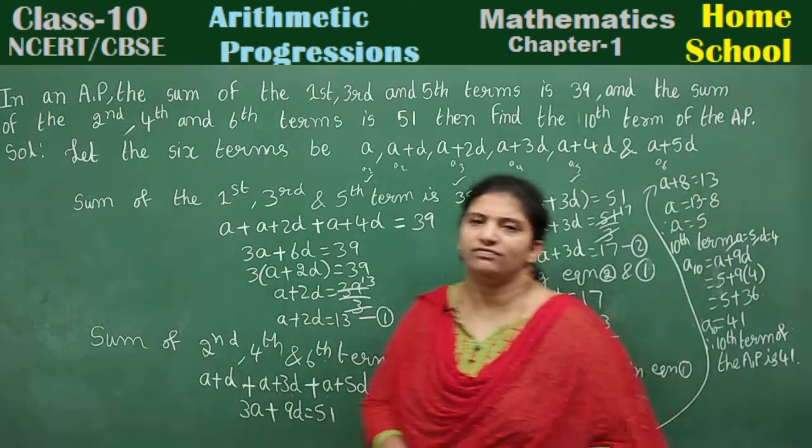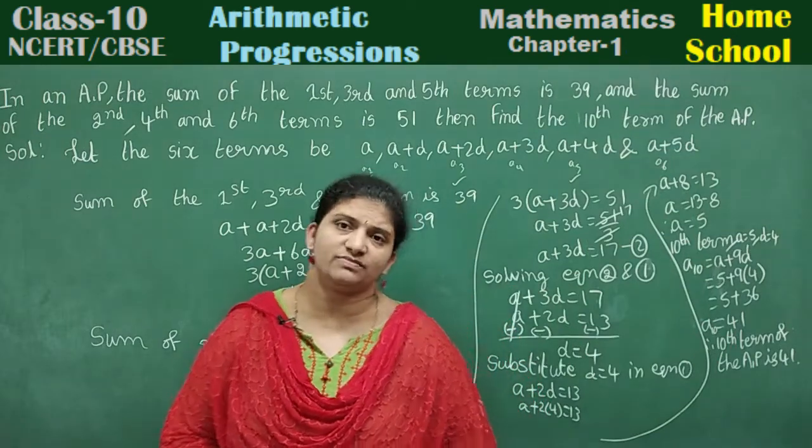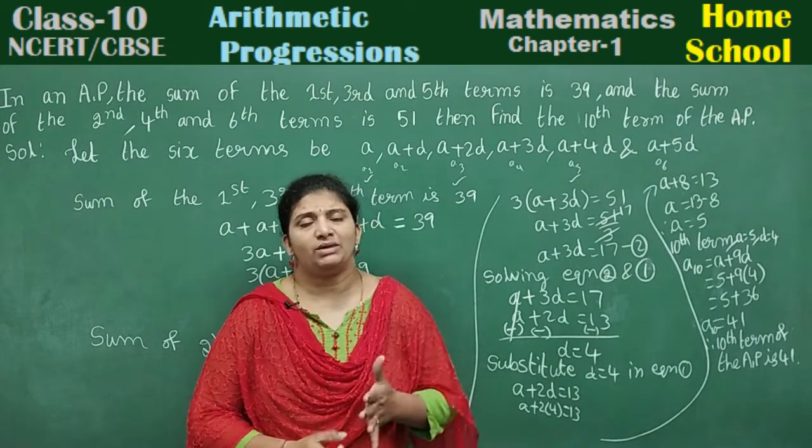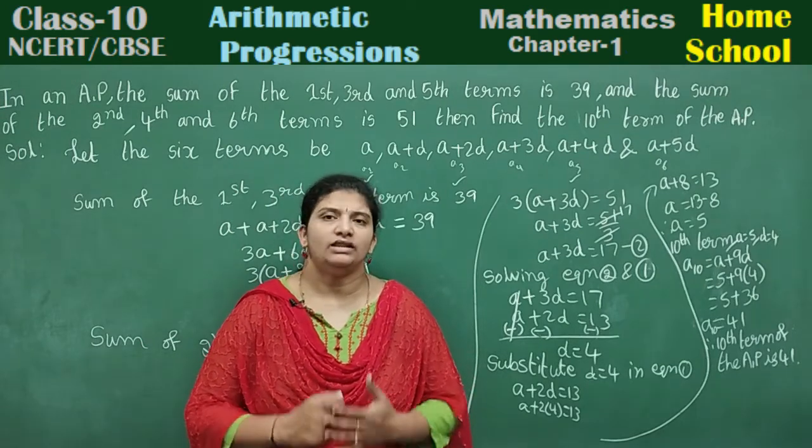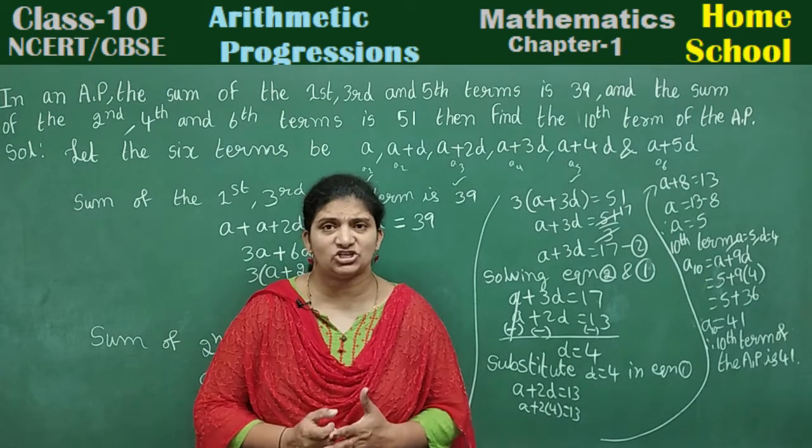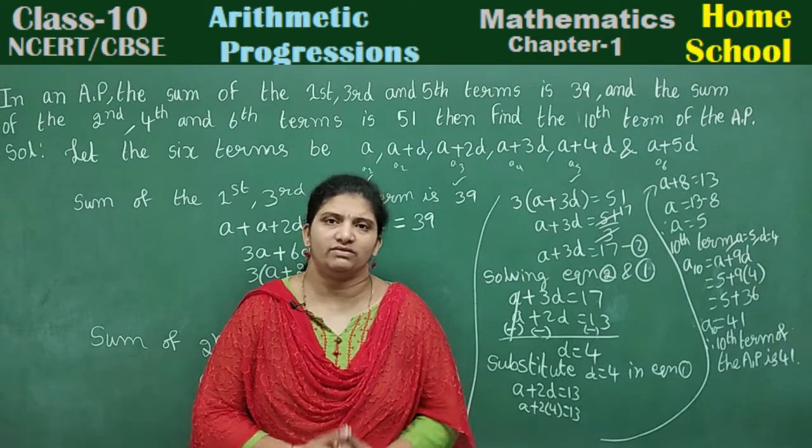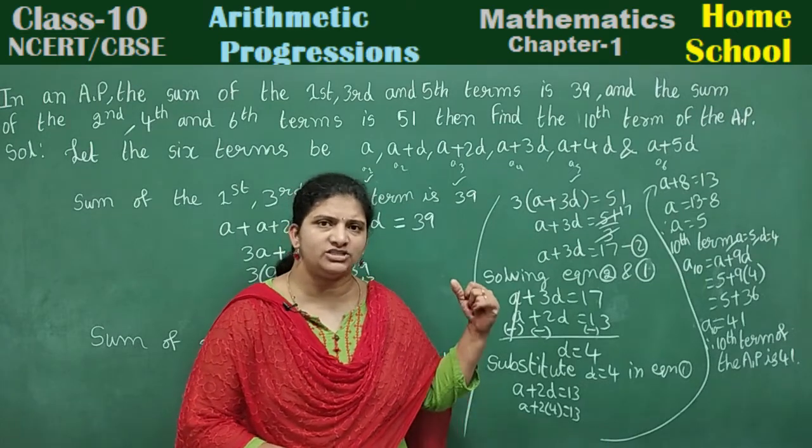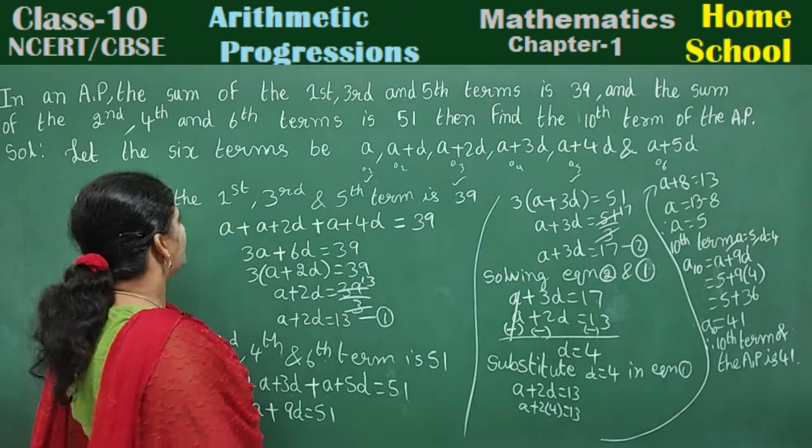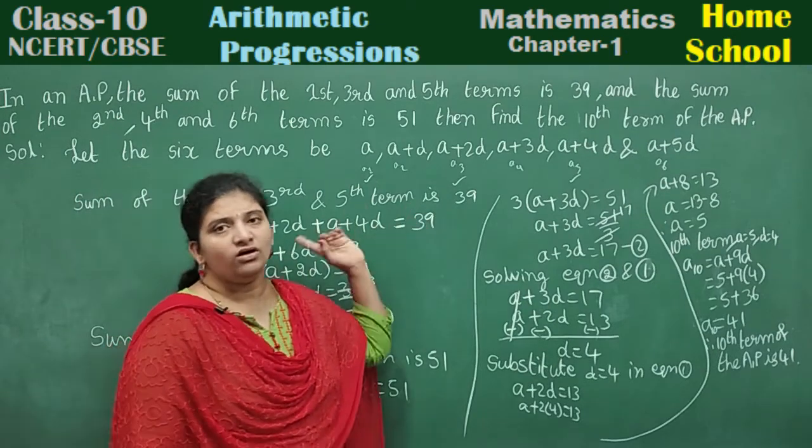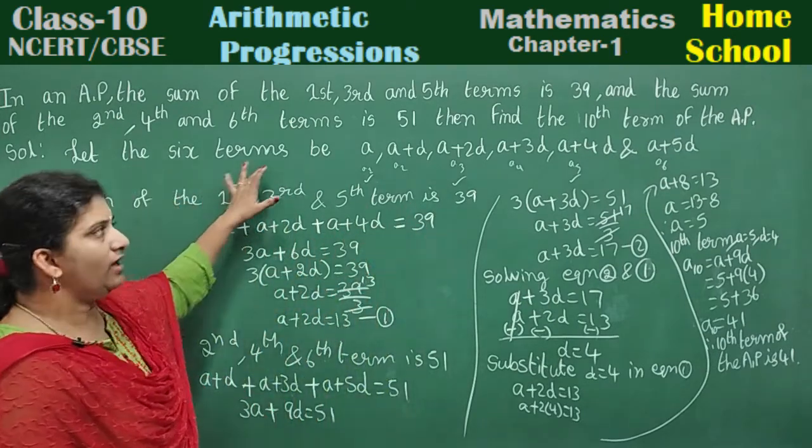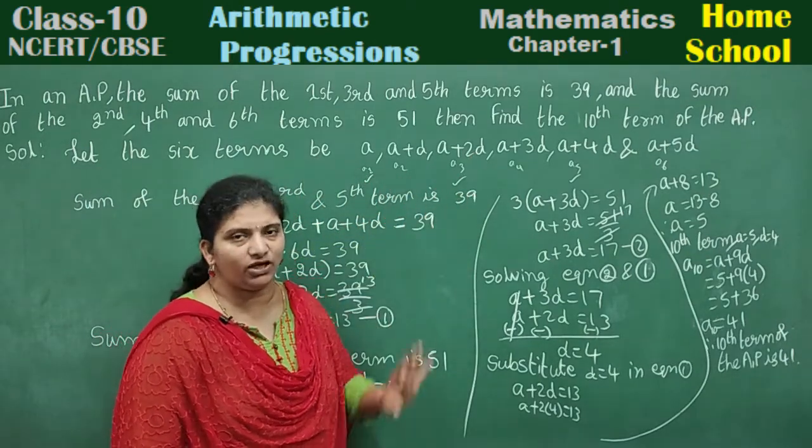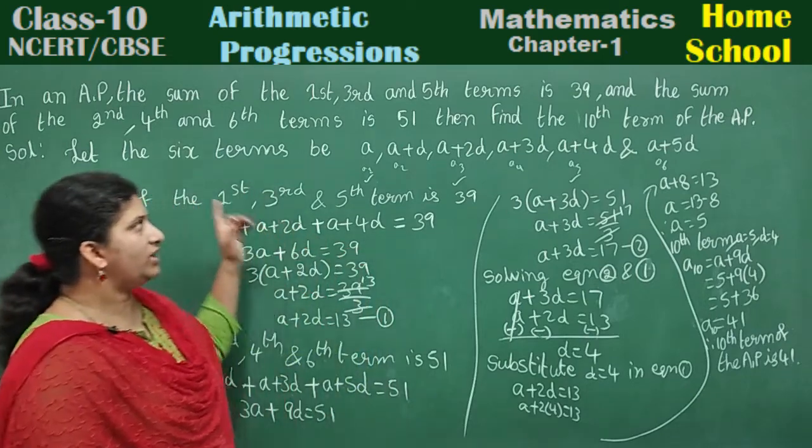Understand the problem here carefully. When we don't know any 6 terms, you should think a little. Suppose sum and product anything given, then at that time you take 6 terms in such a way any one variable will be cancelled. But in this problem, directly take normal general form for 6 terms. First write the general form of all the 6 terms: a, a plus d, a plus 2d, a plus 3d, a plus 4d, and a plus 5d.